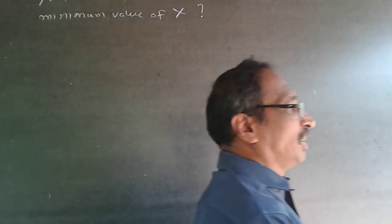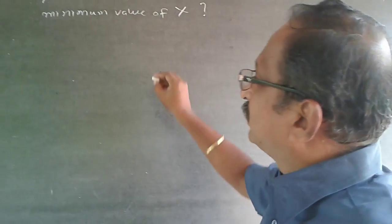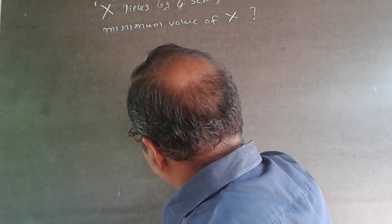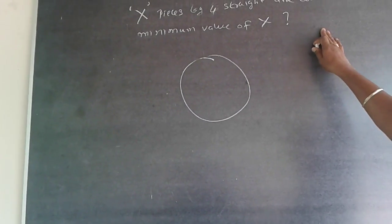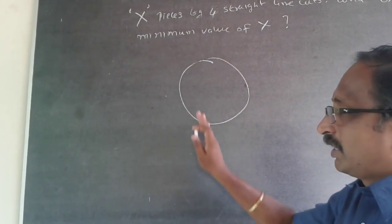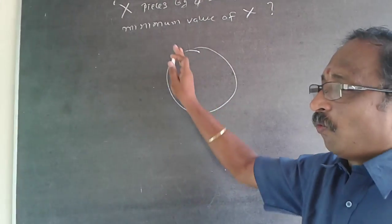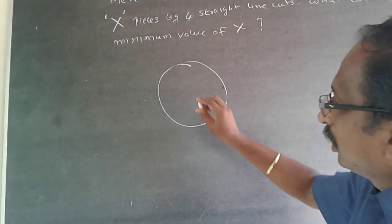This is more of a logical reasoning way of doing things. A circular pita is here. Now when I talk about straight line cuts, it is always from one end to the other end. So it will be like this.